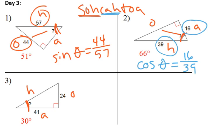Then the last one, opposite and adjacent, so that's tangent. So tangent of our angle is equal to opposite over adjacent.